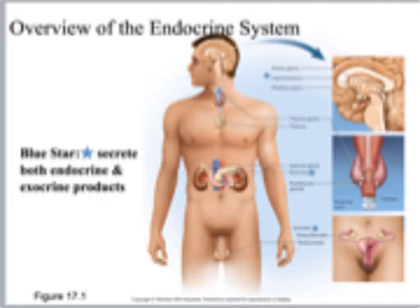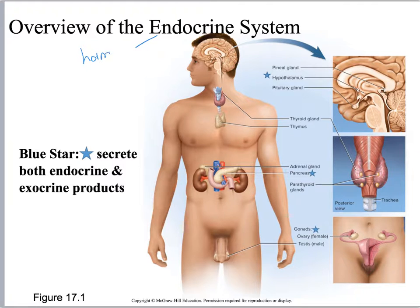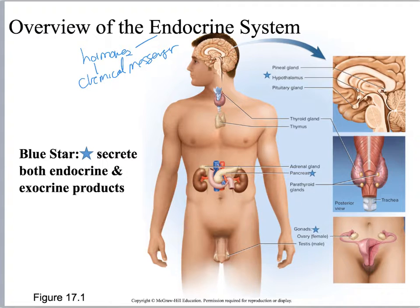Your endocrine system is about hormones. What is a hormone? It's a chemical messenger. In lecture you'll discuss the differences between hormones, cytokines, and neurotransmitters. There are hormones that are also neurotransmitters if you put them in a different location, so don't get confused by that.